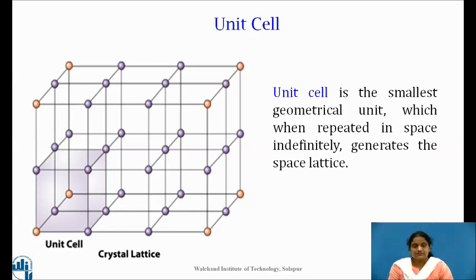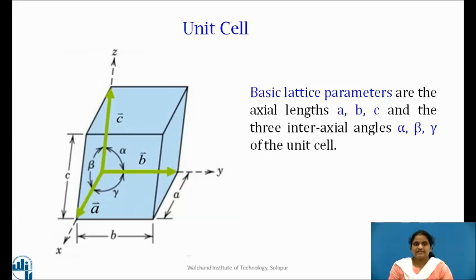Now, the next question comes that how to describe this unit cell? This unit cell is described by the lattice parameters. The lines which are drawn parallel to the lines of intersection of any three faces of the unit cell, which do not lie in the same plane, are called crystallographic axes. The three translational vectors A, B and C lie along the crystallographic axes.